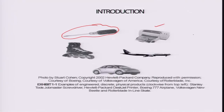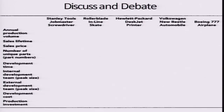We also have a Hewlett Packard printer, roller blade skates, a Volkswagen Beetle, and a Boeing 777 airplane. These are all products from different size ranges and market segments. If we look at some quantitative basis to classify such products, we can classify them in terms of their annual production volume, overall sales lifetime, sales price, number of unique parts, development time, the peak size of the internal development team, and the vendor base associated with the organization for setting up the supply chain.